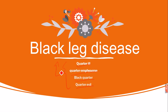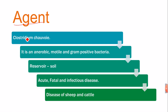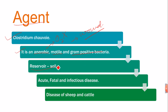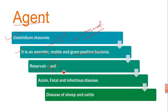The causative agent is Clostridium chauvoei. It is an anaerobic bacteria, meaning it can only survive in environments where oxygen is not present. They get entry into the animal with the help of wounds, though that is not always the case. It is a motile and gram-positive bacteria. The reservoir is the soil — it lives basically in the soil, which contains many types of bacteria, one of them being Clostridium chauvoei.